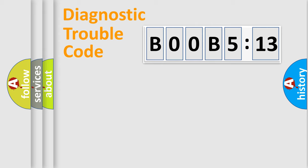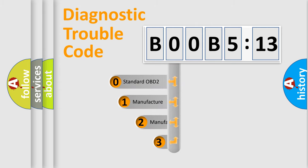Powertrain, Body, Chassis, Network. This distribution is defined in the first character code.